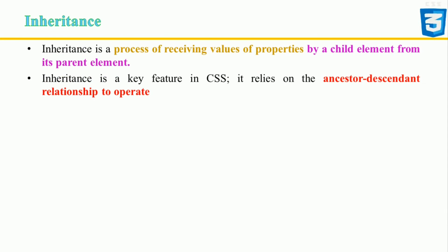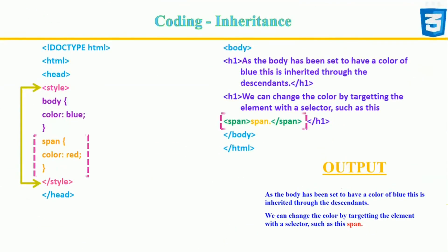Inheritance is a process of receiving values of a property by the child element from its parent element. It can be used to avoid declaring certain properties again and again, allowing for shorter CSS. Inheritance in CSS is not the same as in class-based programming languages. In this example, the h1 element in the body is set to have the color blue, and this is inherited through its descendants. You can also override the color by targeting a child element with a selector like span.